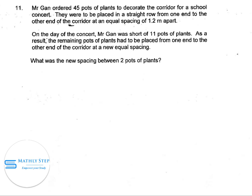Question 11. Mr. Gunn ordered 45 pots of plants to decorate the corridor for a school concert. They were to be placed in a straight row from one end to the other end of the corridor at an equal spacing of 1.2 meters apart. On the day of the concert, Mr. Gunn was short of 11 pots of plants. As a result, the remaining pots of plants had to be placed from one end to the other end of the corridor at a new equal spacing. What was the new spacing between two pots of plants?